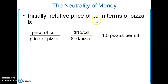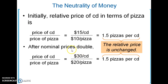Here's an example: a $15 CD and a $10 pizza. That means you need one and a half pizzas per CD — that's your relative price. If you double the money supply, the 1.5 pizzas per CD stays the same, but the nominal prices just double. This is the neutrality of money: the nominal prices double, but the relative prices are unaffected. Only a change in supply of pizzas or demand for CDs would change relative prices — printing money does not.